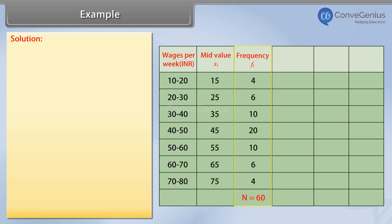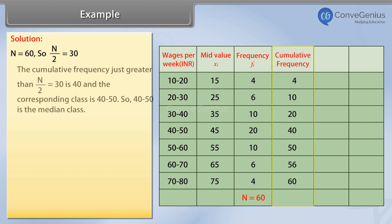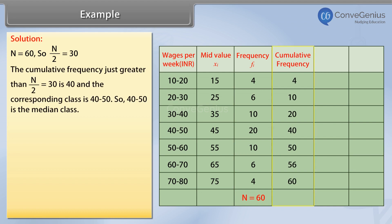And their sum is found to be 60. In the fourth column, we find the cumulative frequency by adding the previous frequency to the current frequency.